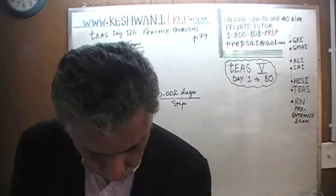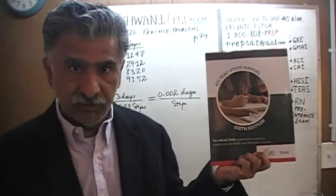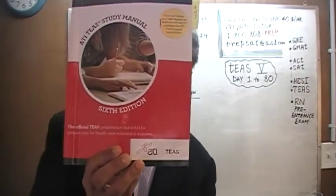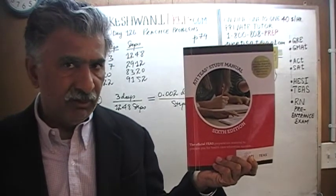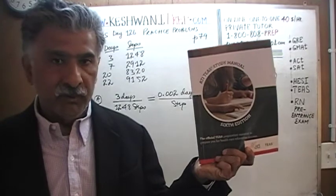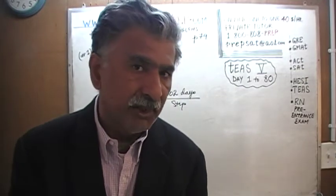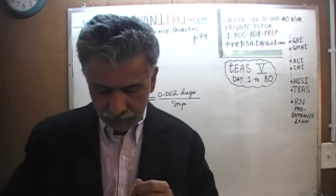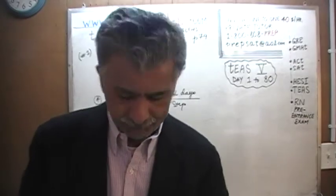Interesting — before they published this 6th edition, they withdrew it from the market because it had too many errors. They supposedly corrected those errors and published a new book, same edition, after the corrections. What I find interesting in this problem is that the lady, when she appears in the problem, she likes to be called Nancy. But I noticed that when she appears in the answer choices, she prefers to be addressed as Mary. Oh well.